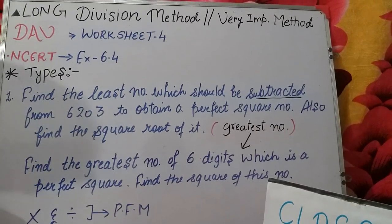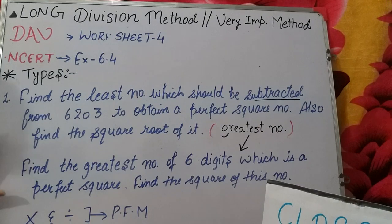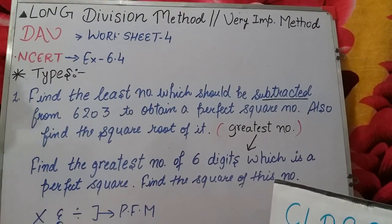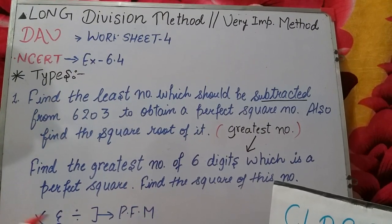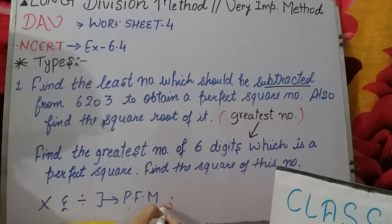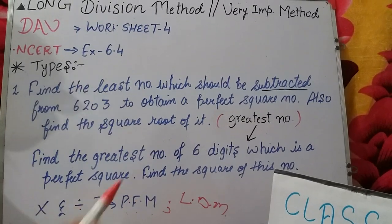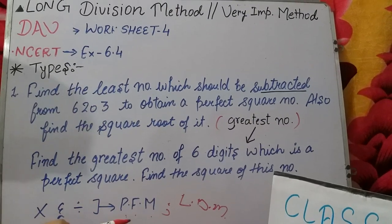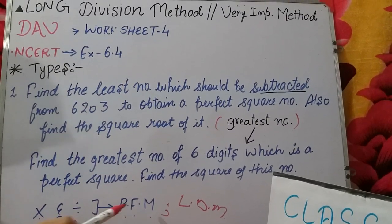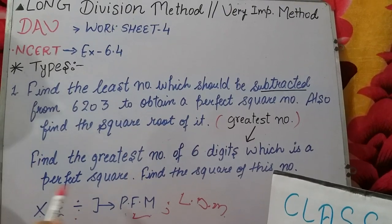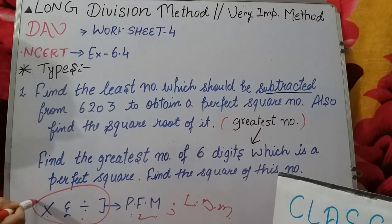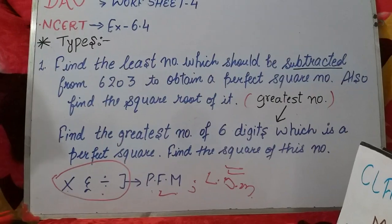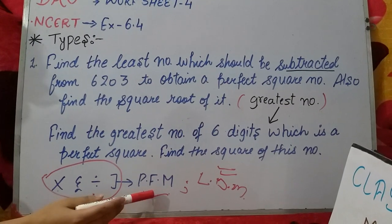If you have to remember one thing for the exam, you need to identify which method to use. We have studied two methods: prime factorization method and long division method. When do you use long division and when prime factorization? When you have to multiply and divide, then you apply the prime factorization method. When no hint is given, then you apply the long division method.